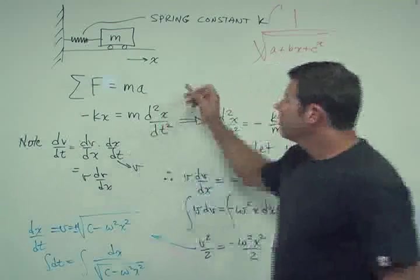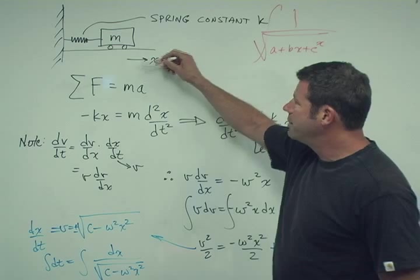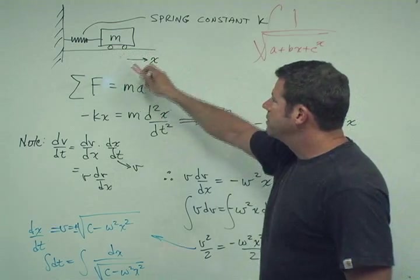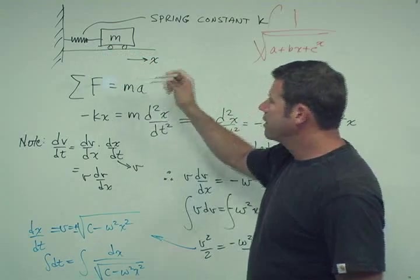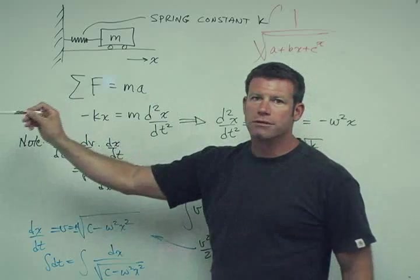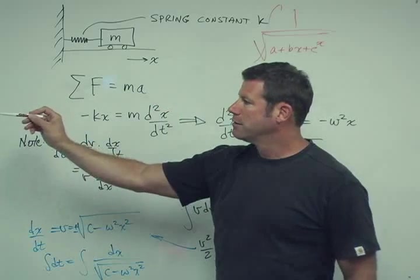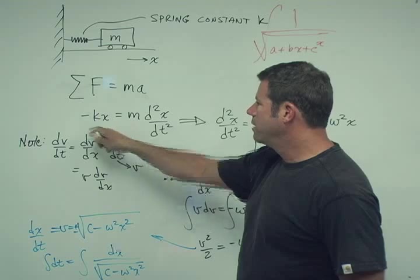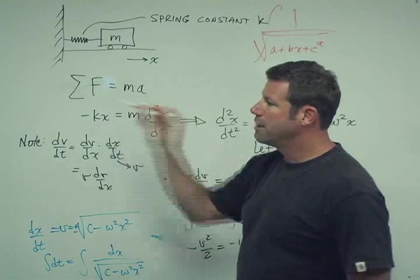So when you let sum of forces equal ma, there's only one force acting on this object, which is the force of the spring. And the force of a spring always goes, it pulls, it goes against the object. So we have to give it a minus kx because it's in that direction.